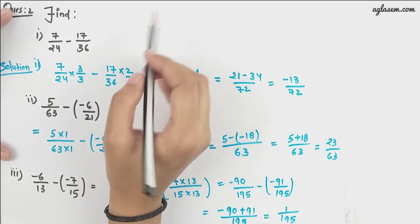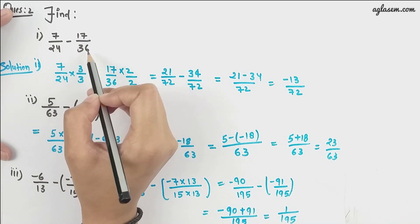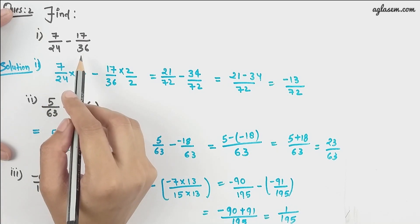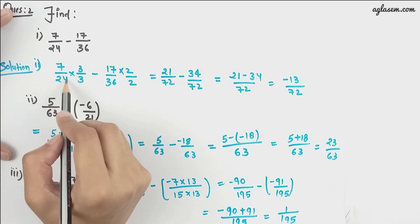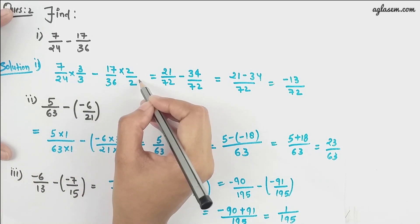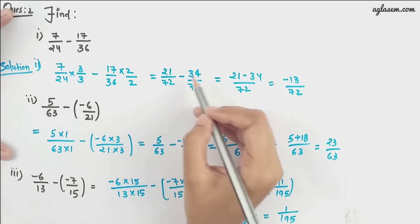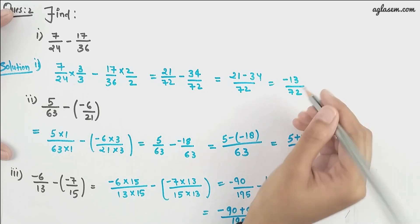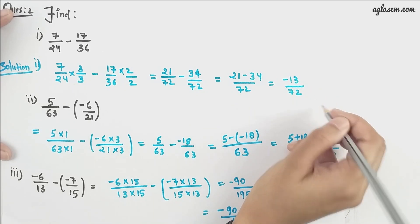Moving to the next question: find 7/24 minus 17/36. First, we make the denominators the same. Multiplying 7/24 by 3 and 17/36 by 2 gives 21/72 minus 34/72, and solving further we get -13/72 as our answer.